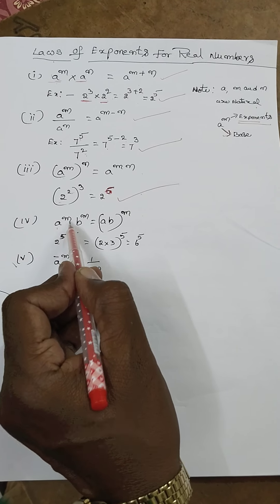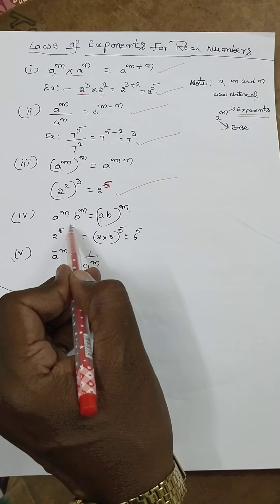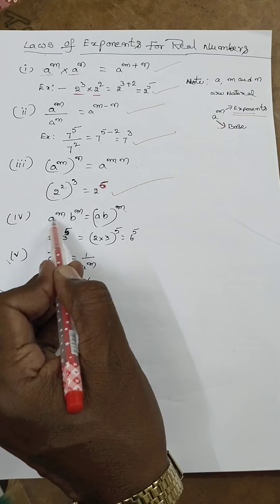Here a^m × b^m = (ab)^m. Powers are equal here in this value, so we take the product of the bases.